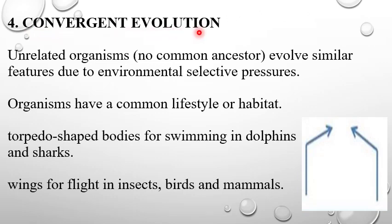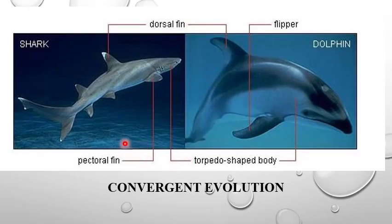Now, the fourth one is convergent evolution. Unrelated organisms, no common ancestor, evolve similar features due to environmental selective pressures. Organisms have a common lifestyle or habitat. For example, torpedo shaped bodies for swimming in dolphins and sharks. Wings for flying in insects, birds and mammals. In this diagram, you can clearly see the torpedo shaped body form of dolphin as well as shark. This is a classic example of the convergent evolution which occurred in both shark and dolphin.